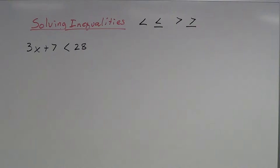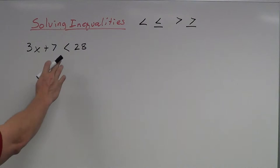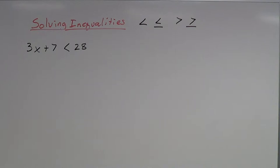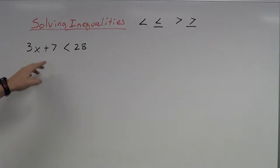Not only are we going to solve these, but we're also going to graph them on a number line so we can see what the solutions look like. The rules for solving inequalities are actually the same rules we use for solving equations. We treat the inequality just like an equal sign — adding, subtracting, multiplying, and dividing on both sides to solve for the variable. Basically, I'm looking for what numbers, if I plug them in, are going to be less than 28.